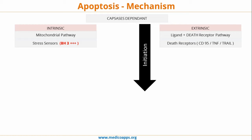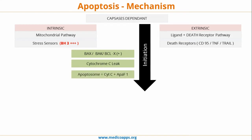Once these sensors and receptors are activated, this leads to the initiation phase of apoptosis. Factors which promote the intrinsic pathway are BAX, BAK, and BCLx. Cytochrome C leak is also a promotory factor, as is the apoptosome, which is cytochrome C plus apoptosis-activating factor 1 (APAF-1). All three are activators of the intrinsic pathway.